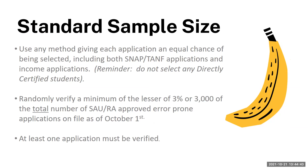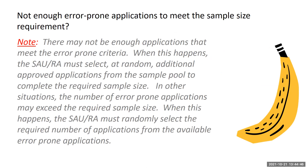There may not be enough applications that meet the error prone criteria. When this happens, the SAU or RA must select at random additional approved applications from the sample pool to complete the required sample size. In other situations, the number of error prone applications may exceed the required sample size. When this happens, the SAU or RA must randomly select the required number of applications from the available error prone applications.